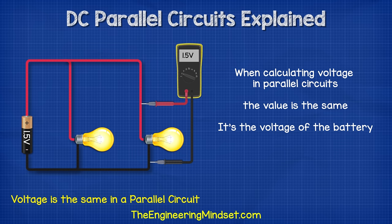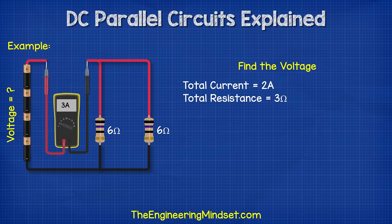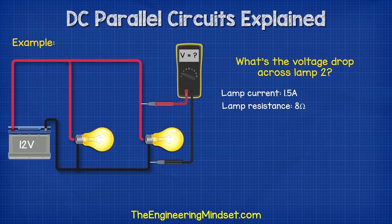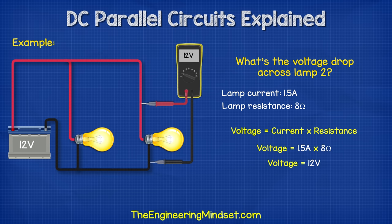For example, in this circuit the total current is two amps and the total resistance is three ohms. So what is the voltage of the battery? Well, from Ohm's law, we know that voltage equals current multiplied by resistance. So voltage equals two amps multiplied by three ohms, which gives us six volts. Another example: this circuit is connected to a 12 volt battery. What is the voltage drop across the end lamp? That's easy — voltage equals current multiplied by resistance. It has a current of 1.5 amps and a resistance of eight ohms, so 1.5 amps multiplied by eight ohms gives us 12 volts.